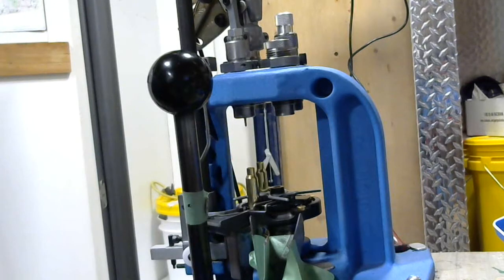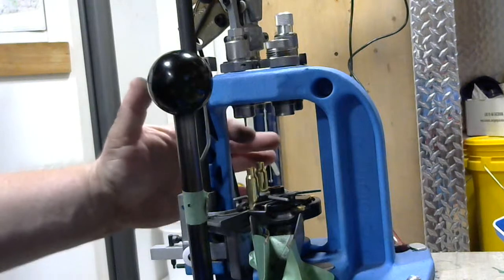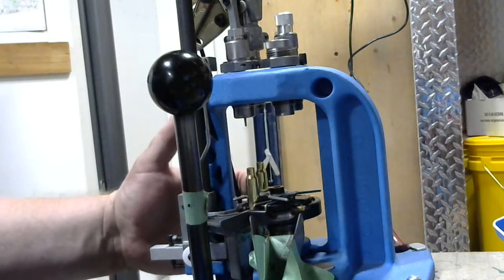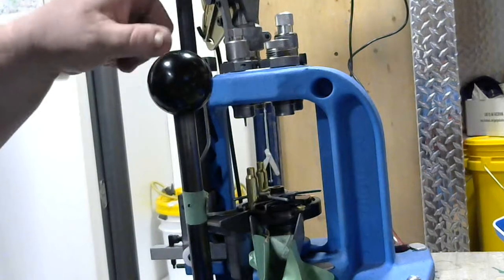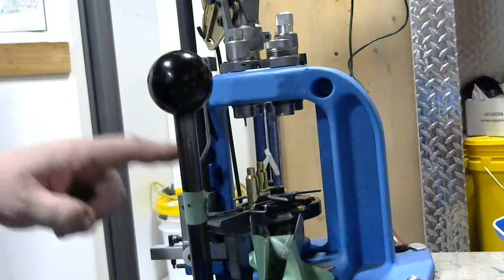The making of a high precision round, 6.5 Grendel, on a Dillon 650. After taking around 15 pours to get my powder dropper dropping the exact charge that I want...